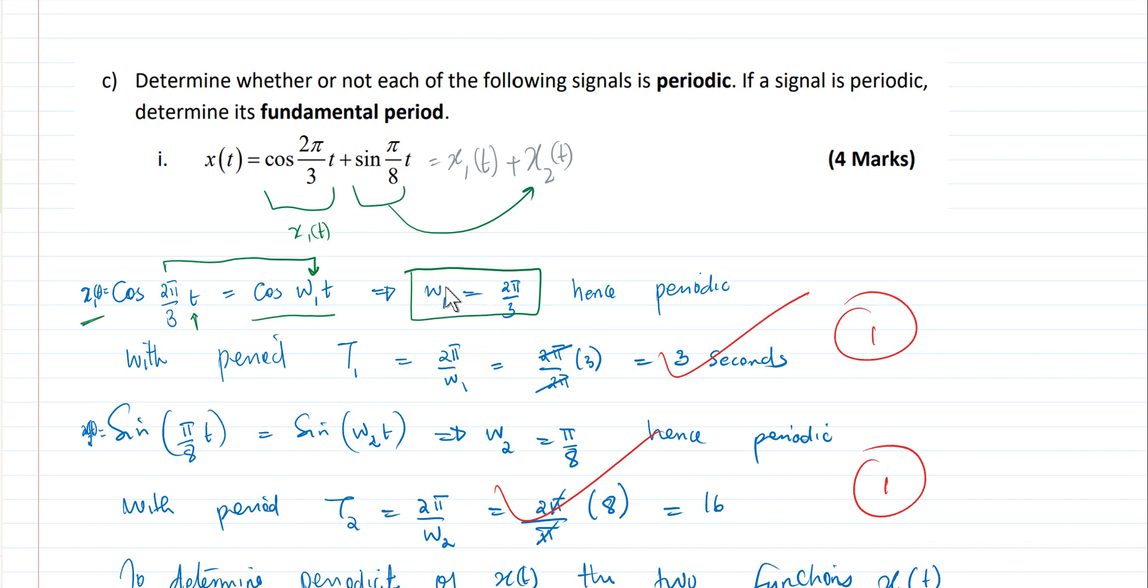And since we can determine the angular frequency of our signal, we make a conclusion that our first function of t is periodic, because any function that has angular frequency is periodic. So from that, we can now determine the period of that function.